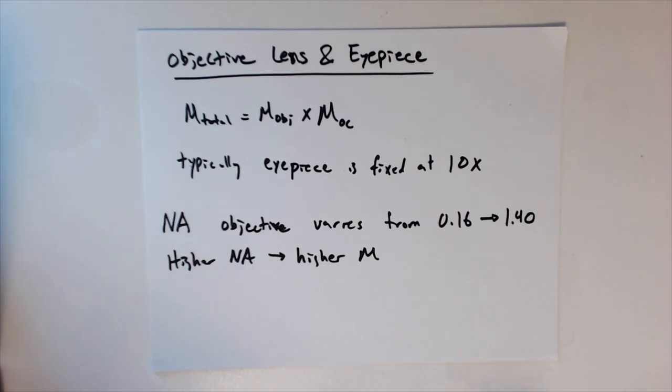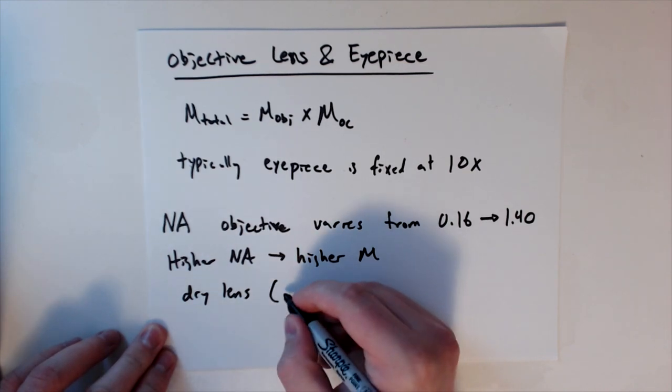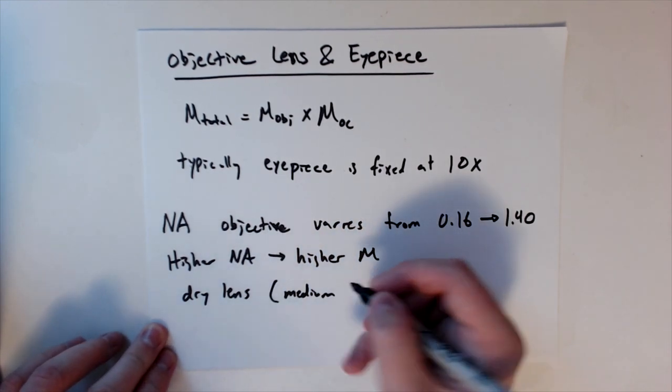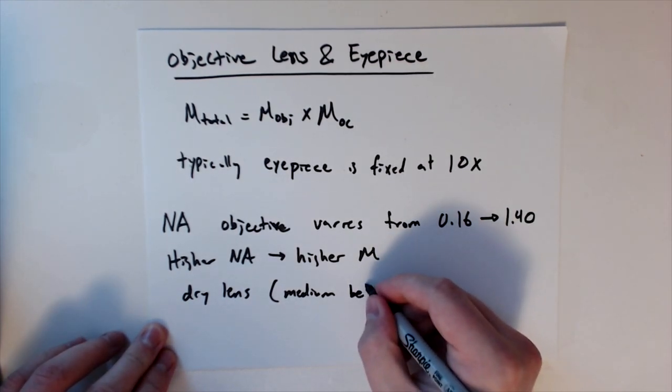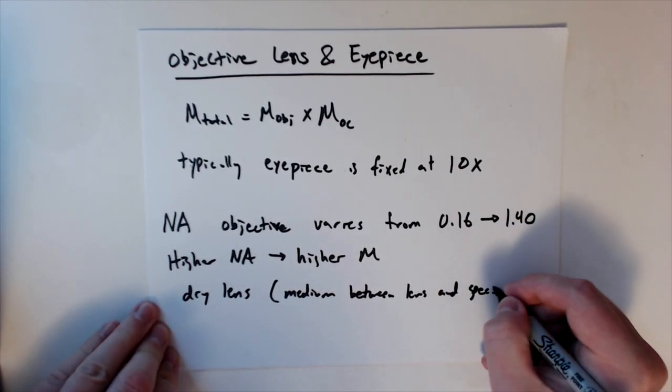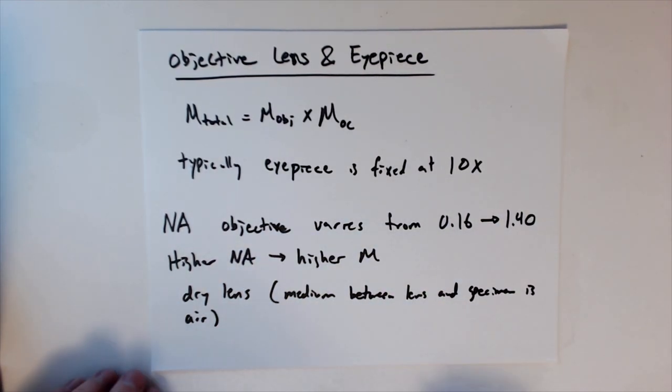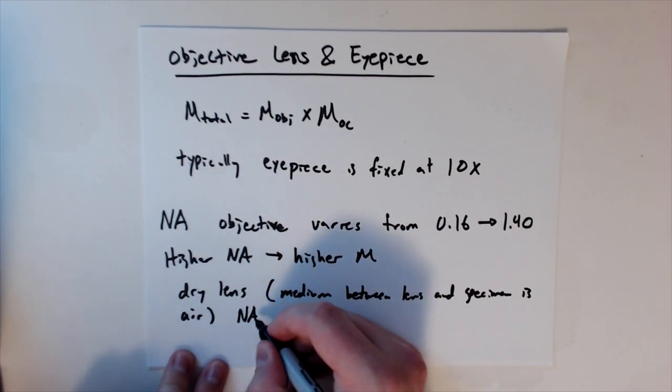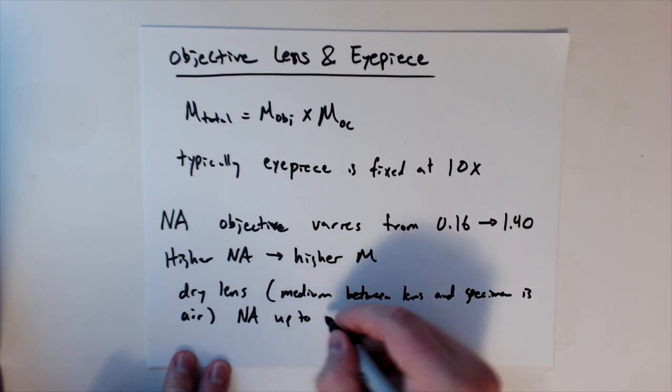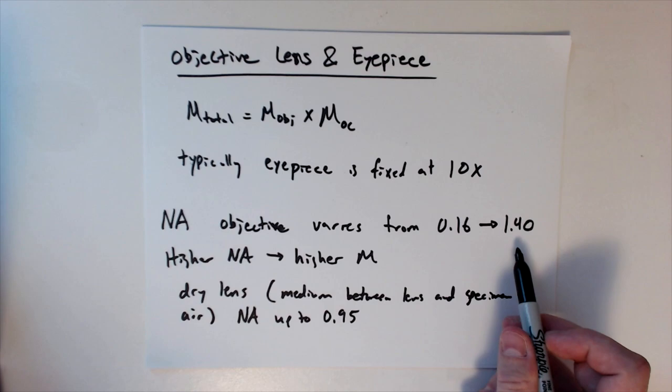Also, we have two types of lenses. We have what's called a dry lens. And this is where we just have medium, the medium, so the fluid between the lens and specimen. And this is air. All right, so it's dry because it's air. And so that can have a numerical aperture of up to 0.95. So you can see that this doesn't quite reach one, yet I said that it can vary up to 1.4.